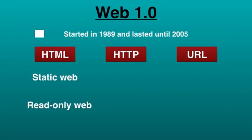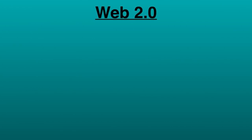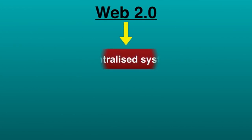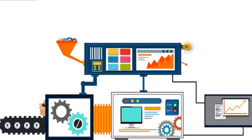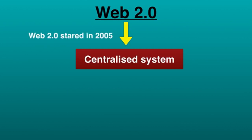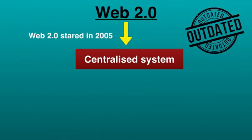Web 2.0 is based on a centralized system, which means big companies like Twitter, Facebook, Google, Apple, Microsoft, and Amazon control how our data will be used and where it will be stored and processed. Web 2.0 started in 2005 and is currently being used. Read-only mode became outdated — Web 2.0 was promoted as a read and write platform for reaction and interaction.